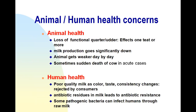There are concerns about this disease from both animal health and human health points of view. From the animal health point of view, there is loss of functional quarters or udder. Mastitis can affect one, two, three, or all four teats. Milk production goes significantly down, the animal gets weaker due to infection and toxemia, and sometimes sudden death of the cow can occur in peracute or acute cases.